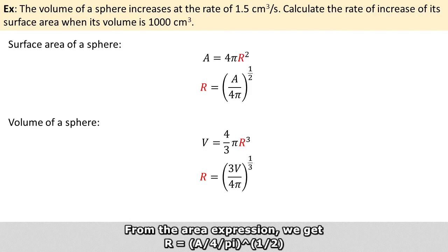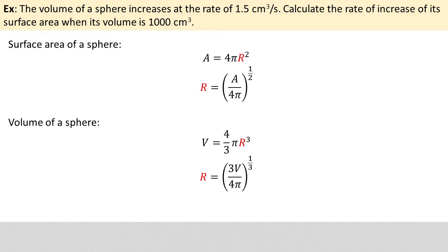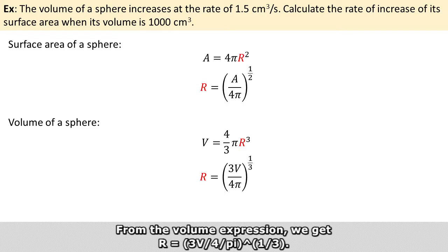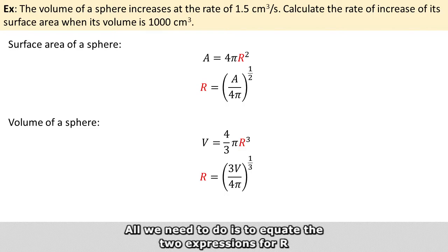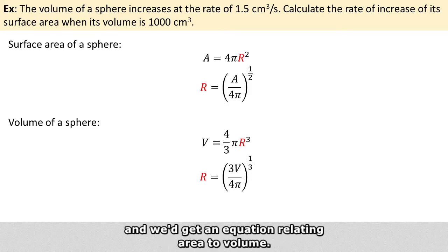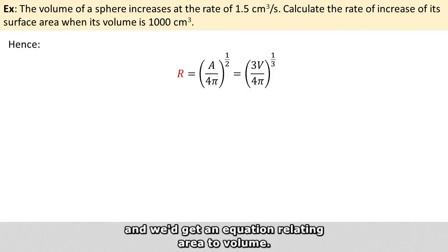From the area expression, we get r equals (A over 4π) raised to the power of 1/2. And from the volume expression, we get r equals (3V over 4π) raised to the power of 1/3. So all we need to do is equate the two expressions for r, and we get an equation relating area to volume.